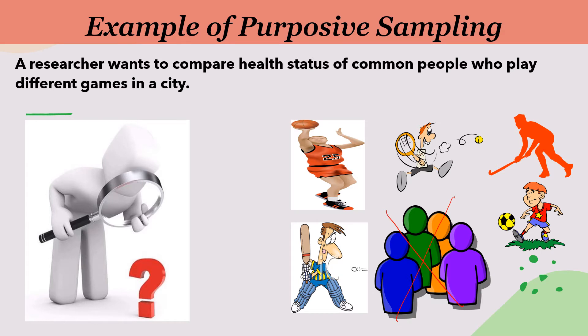Next, researcher needs to fix criteria of number of hours a person plays a game in a week or month. The members who do not fulfill this criteria will be rejected. Here, researcher will use his or her own judgment to handpick the sample. Even if this sample does not be a true representative of the population, this sample should have common characteristics which the researcher wants to study. And researcher should be able to get maximum information from these members. In this picture, it is shown people playing different games. Researcher will select only those who play specific games which he wants to study.